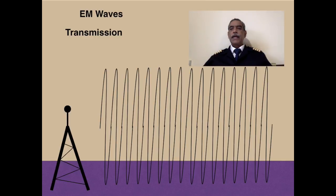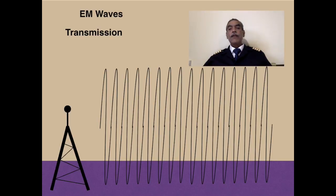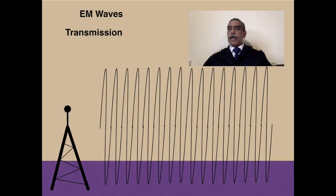We just saw how alternating current is produced. Now when such an alternating current is applied or transmitted on an aerial, it transmits a waveform which is what we call the electromagnetic wave. The aerial length has to be appropriate, among several other things, but essentially when you apply alternating current to an aerial, the resulting waveform is called an electromagnetic wave. It will have several characteristics which vary according to the number of times the magnet rotates, how fast it rotates, how strong the magnetic field is, and so on.